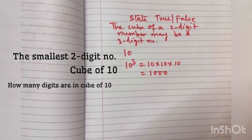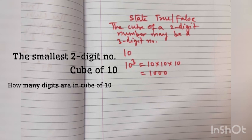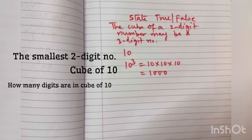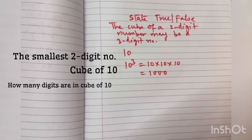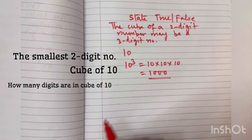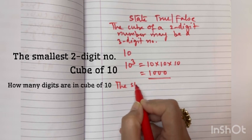So how many digits are there in ten cube? Four. So tell me the answer now. The cube of a two-digit number may be a three-digit number. False. Because the smallest two-digit number is ten, the cube is having four digits. So the statement is false.